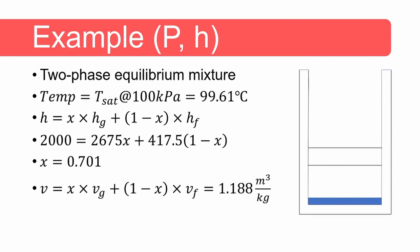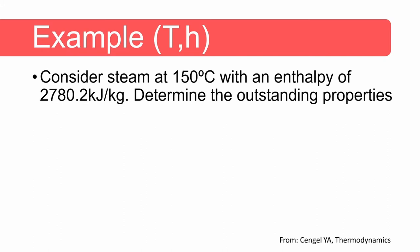Let's do another example. Consider steam at 150 degrees Celsius with an enthalpy of 2780.2 kilojoules per kilogram. We need to determine the outstanding properties — first we need to determine the phase. We can find the enthalpy of saturated liquid water at 150 degrees Celsius in the saturated liquid water temperature table.